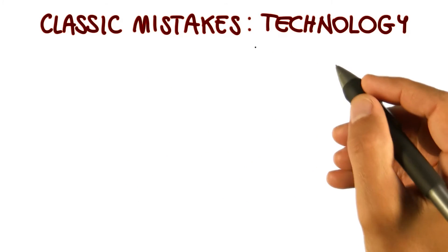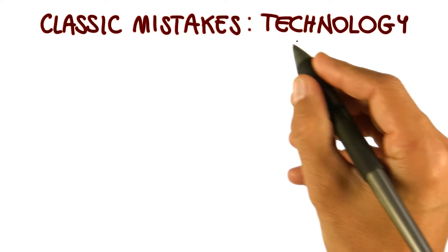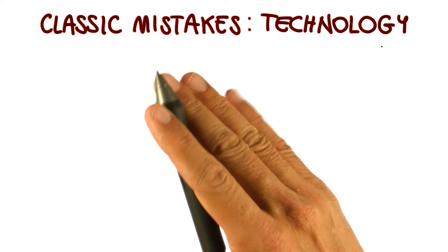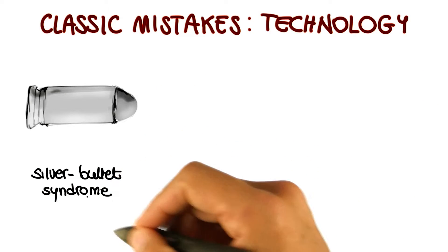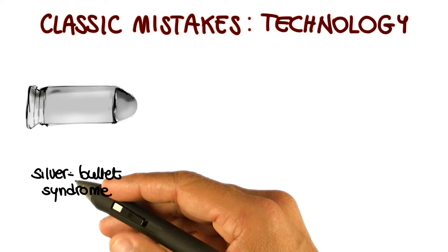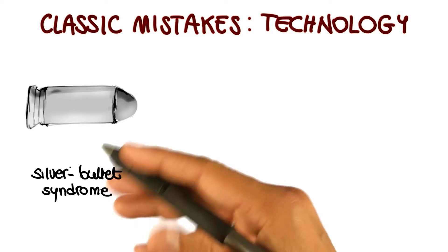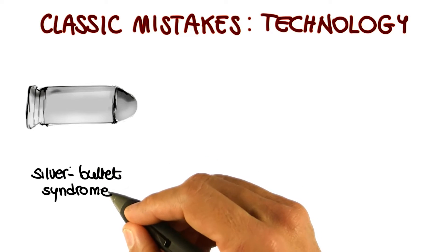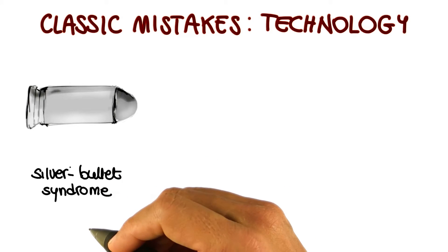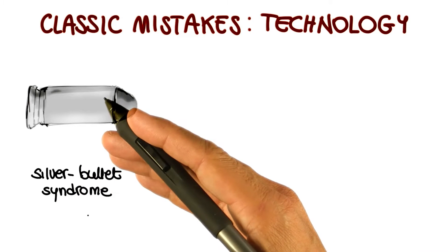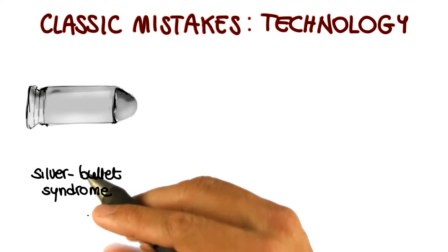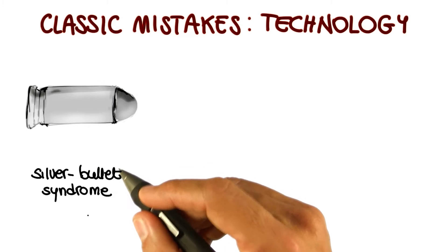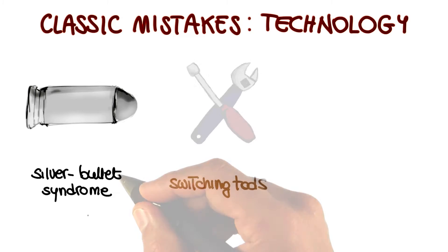The final type of classic mistakes I want to mention are technology-related mistakes. One typical mistake in this context is the silver bullet syndrome. This refers to situations in which there is too much reliance on the advertised benefits of some previously unused technology — for example, a new technology. The problem here is that we cannot expect technology alone to solve our software development issues, so we should not rely too much on technology alone.